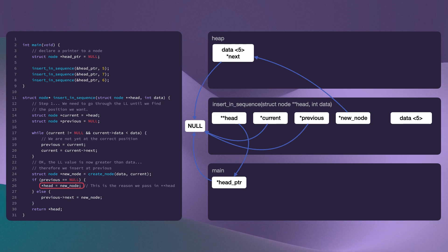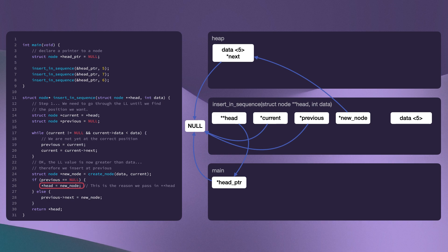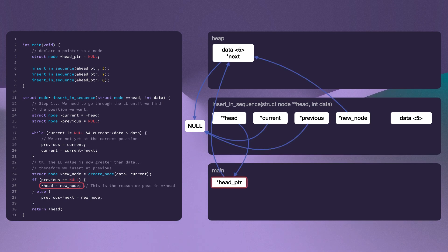So what we're saying here is: take the value of new-node, which is that location on the heap where we have our node with the value of five, and assign it to a single dereference of head. That's what the asterisk on line 26 is saying. So it's saying: follow the pointer in head once, which gets us into the head pointer location in main, and change the value in memory that it's storing to be the location of the node with the value of five on the heap. This actually changes what's happening in main, and there's really no other way of doing this unless you pass in a pointer to the memory location that you'd like to change. That's the reason we pass in a pointer to a pointer.